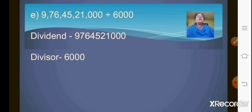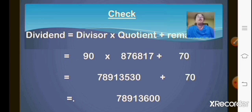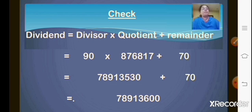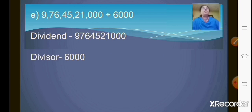Now how to check this answer — the checking part. The formula is: dividend equals divisor into quotient plus remainder. Your divisor was 90, quotient we got as 8,76,817, plus remainder 70. You will not write 7 — you will add the zero and write the remainder as 70. When you multiply the divisor and the quotient and add the remainder, you will get your dividend. That is what we have already done in the last class. You can simultaneously do it along with me or then check the answer.